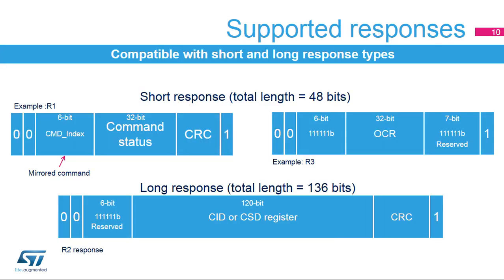A response is a token sent from the card as an answer to the previous command. There are two types of responses: short and long. With four 32-bit response registers, the SDMMC interface supports both long and short responses. Short responses have a total length of 48 bits and are composed of a mirrored command index, 32-bit command status, StartBit, StopBit, and CRC7 checksum. Long responses have a total length of 136 bits and are composed of the 120-bit CID-CSD register content with the StartBit, StopBit, and CRC7 checksum.